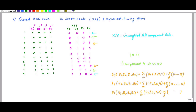In this video we are going to discuss how to convert BCD code — Binary Coded Decimal — to XS3 code, and implement it using a PROM. PROM stands for Programmable Read Only Memory.